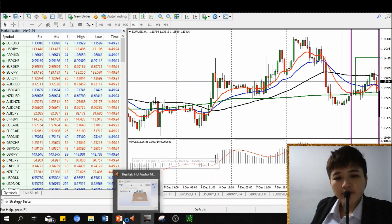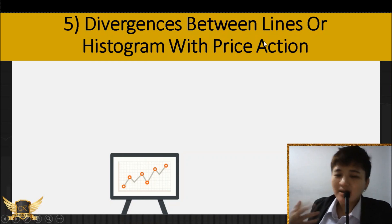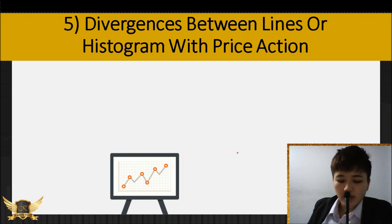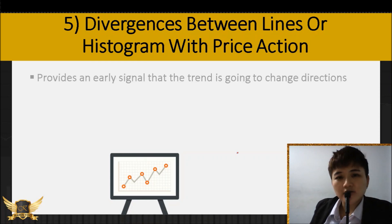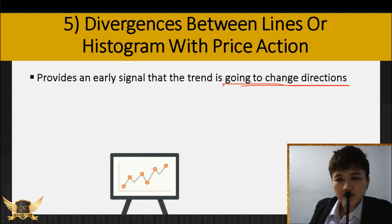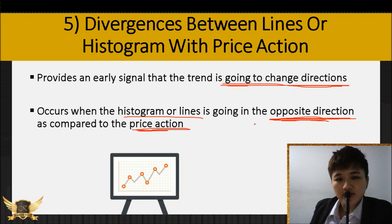The fifth way to evaluate MACD is divergence — the divergence between the MACD lines or histogram and the price action. There are two types of divergence. When you see a divergence, meaning different directions between the lines or histogram and the price action, it means the price is going to reverse direction — so you better get out or take profit, or if you have a signal to enter, better not.